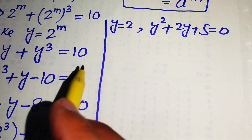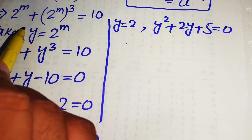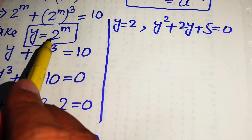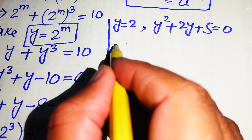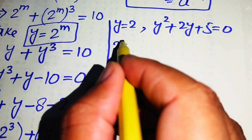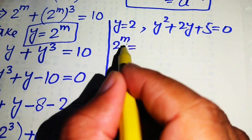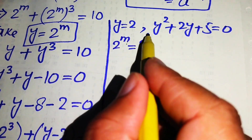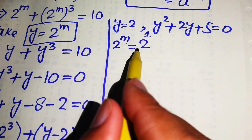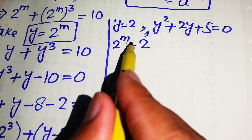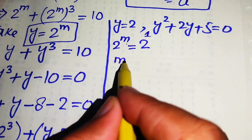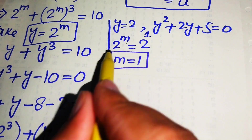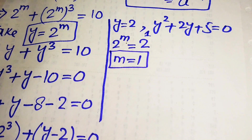We back-substitute the value of y, recalling that y equals 2 to the power of m. Substituting into the first case gives 2 to the power of m equals 2. Since the bases on both sides are the same, we equate the exponents, and the first real root of the given equation is m equals 1.